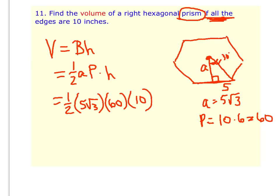Because again, remember, if all of the edges are 10, that means that in the hexagon, the hexagon and the prism would have a height of 10. So now if I multiply through, I get 1500√3, and that would be cubic inches.